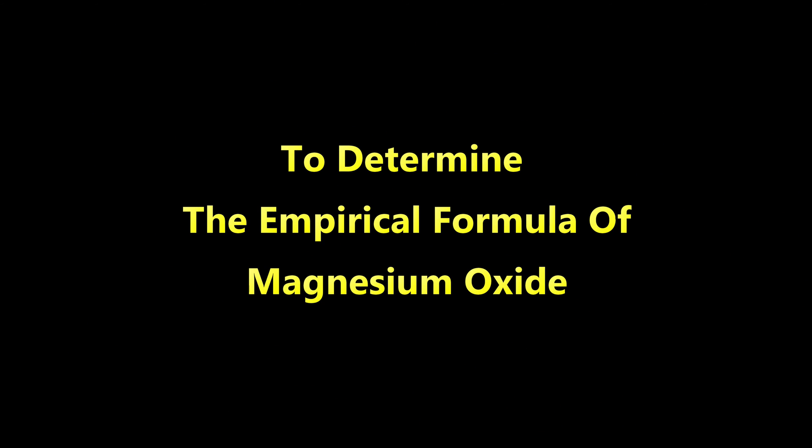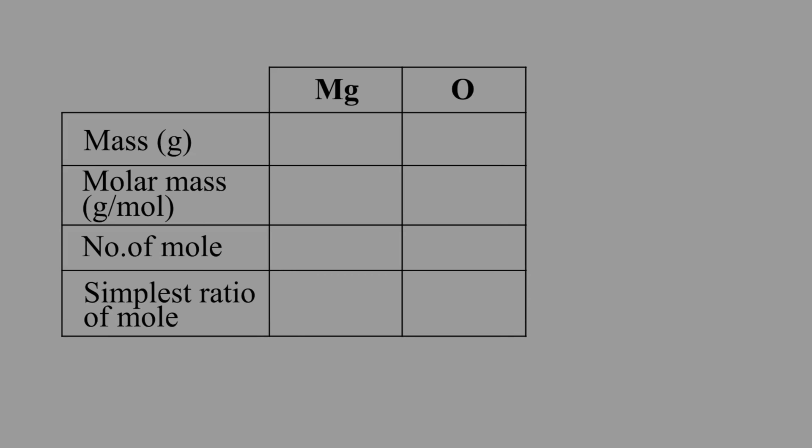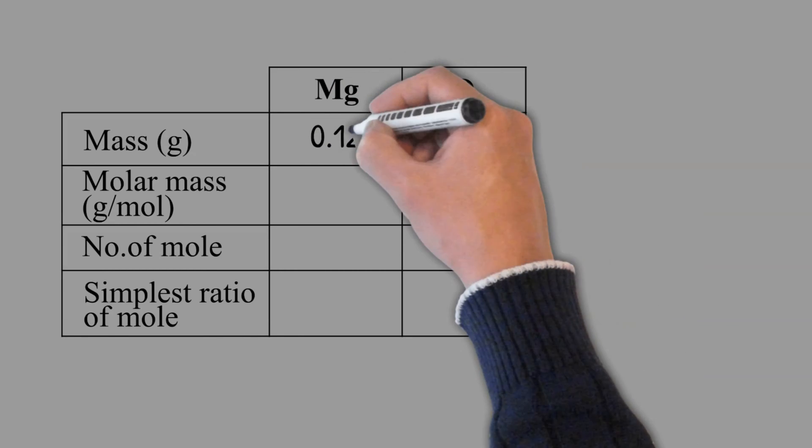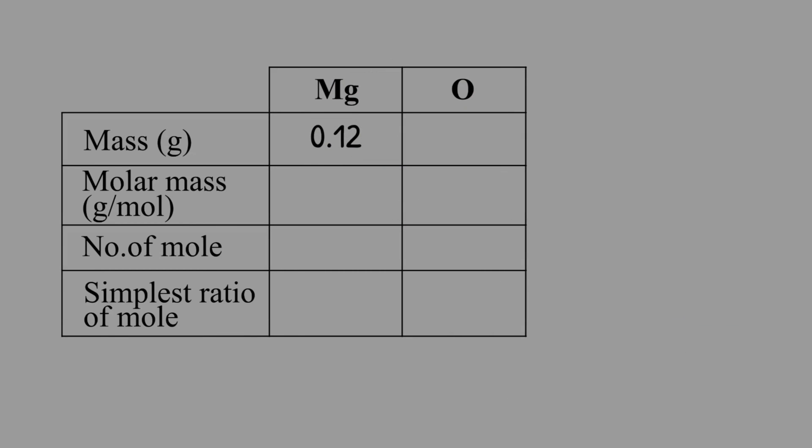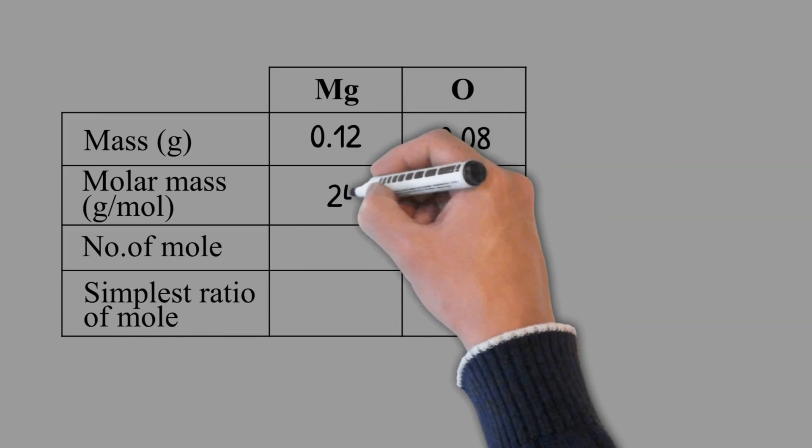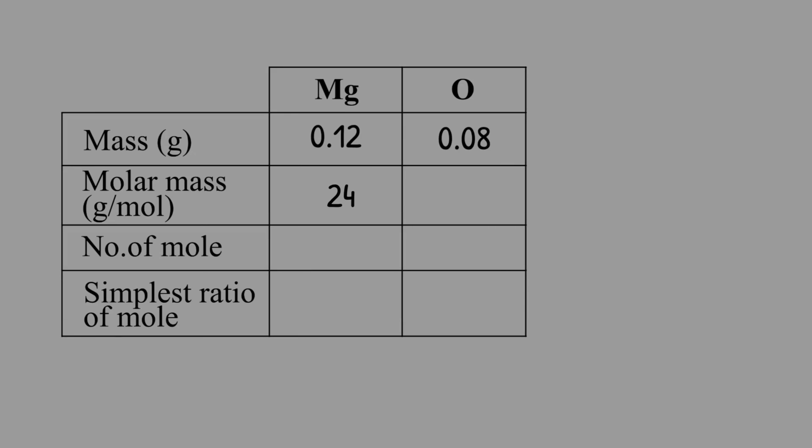To determine the empirical formula of magnesium oxide. The mass of magnesium is 0.12 grams. Oxygen 0.08 grams. The molar mass of magnesium is 24 gram per mole. The molar mass of oxygen is 16 gram per mole.